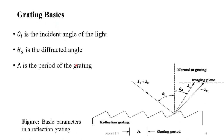Coming to the grating basics, this diagram shows the basic parameters in a reflection grating. We can observe that light having two wavelengths lambda 1 and lambda 2 is falling on this grating and after falling it gets reflected and separated into two wavelengths, lambda 1 and lambda 2, which can be captured at the imaging plane. The angle theta i is the incident angle with respect to the normal, theta d is the diffracted angle, and the capital lambda represents the grating period — the distance from one edge to another.